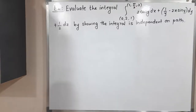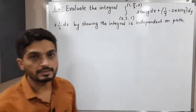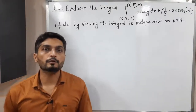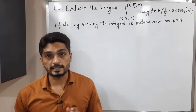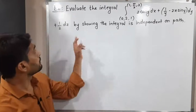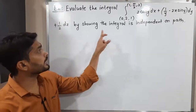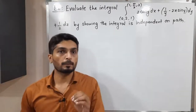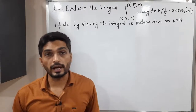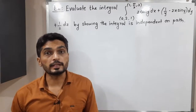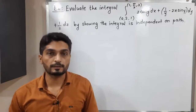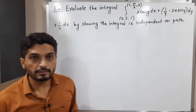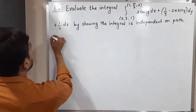Hi everyone, let us discuss this example. In this example, we have to find the value of this line integral, but by showing the integral is independent on path. That means simply we have to prove that the field is conservative. So let us write the given integral first.